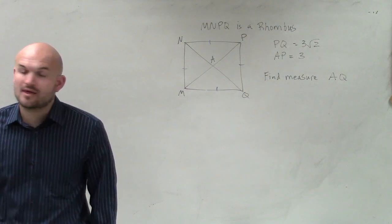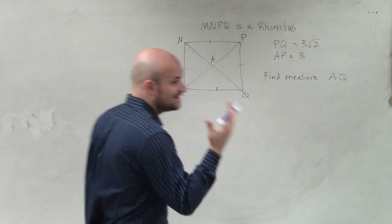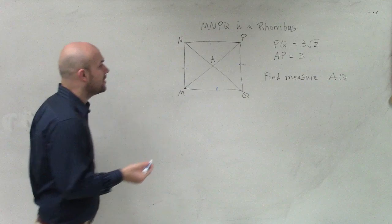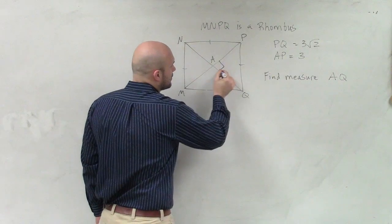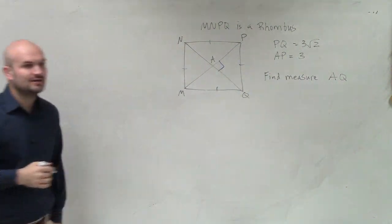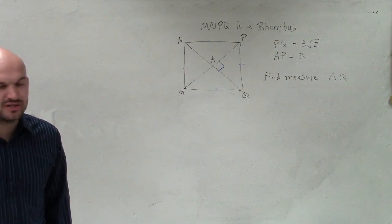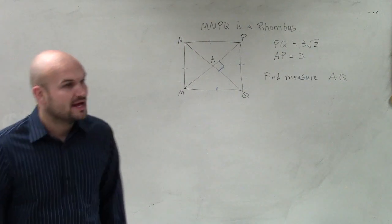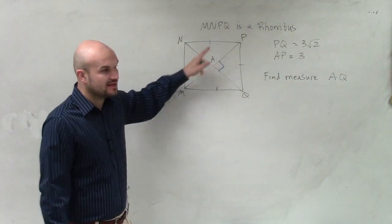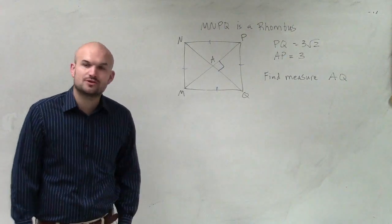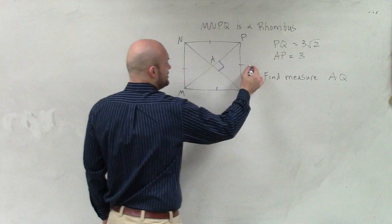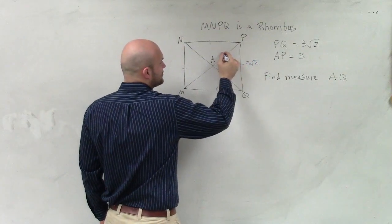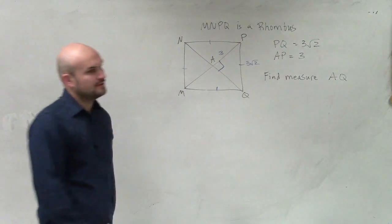They're perpendicular. So if they're perpendicular, that means they create a 90 degree angle. So I can write that in for all of them. So if that's 90 degrees, that means all of those angles are going to be 90 degrees within here. So now let's go and look at what we know. They say PQ is 3 square root of 2, and AP equals 3.